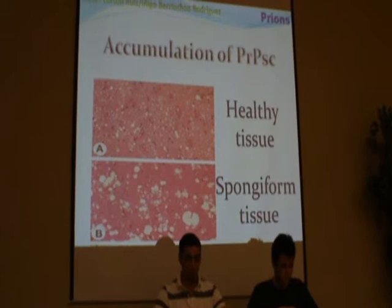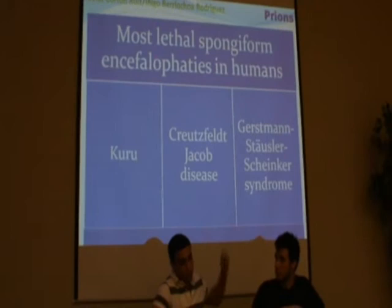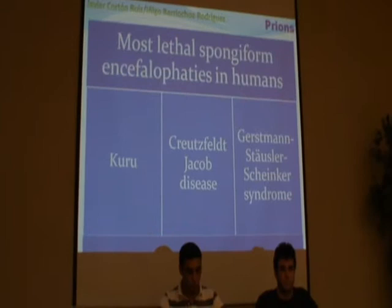As we said before, spongiform encephalopathies are a family of pathologies caused by prions. Probably the three most lethal of these diseases in humans are Kuru, Creutzfeldt-Jakob, and Gerstmann-Sträussler-Scheinker syndrome — all of them incurable neurobiological disorders.